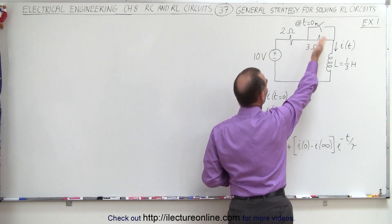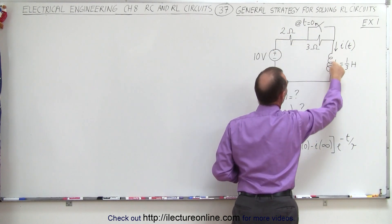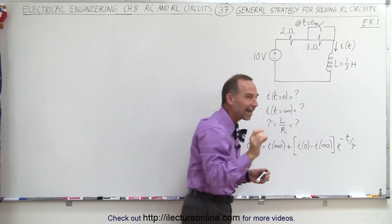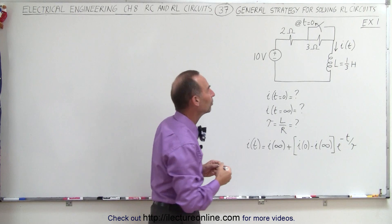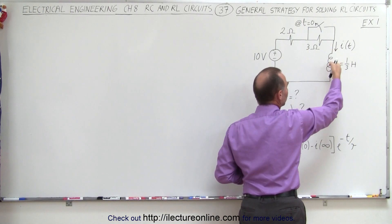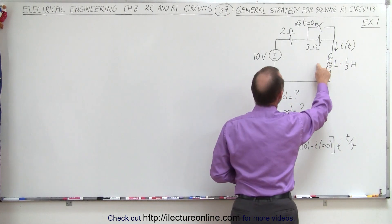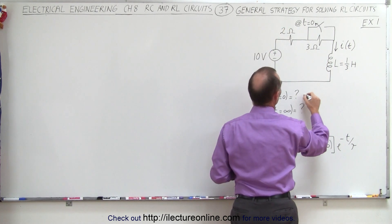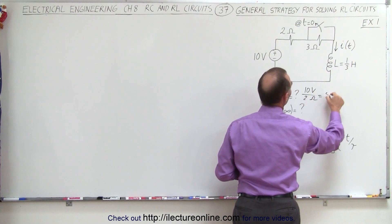First of all, when the switch first opens at that moment, the current is going to flow through both of the resistors, but the current at that moment will be exactly the same as the moment prior to when the switch was opened. The current through the inductor, if it's not changing, means the inductor basically doesn't offer any resistance, so it's simply Ohm's law — the voltage applied divided by the 2 ohm resistor. So this will be 10 volts divided by 2 ohms, or 5 amps.